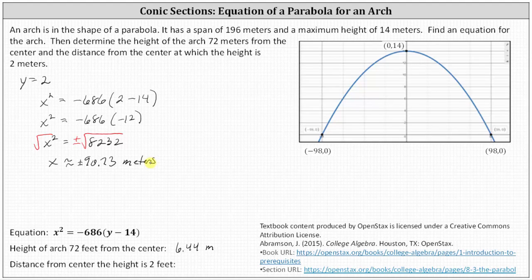So to answer the question, the distance from the center at which the height is two meters would be 90.73 meters. This means we can be either to the right or left of center, 90.73 meters, and the height will be two meters.